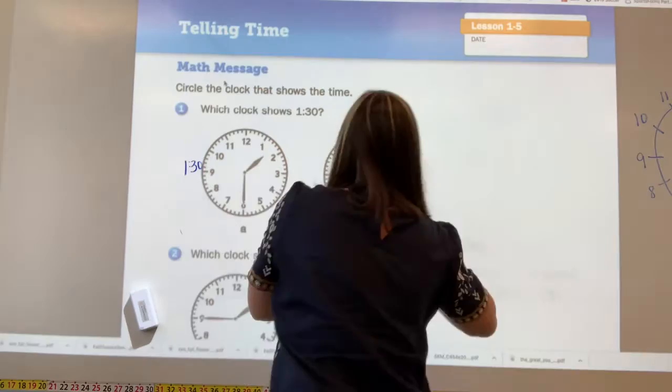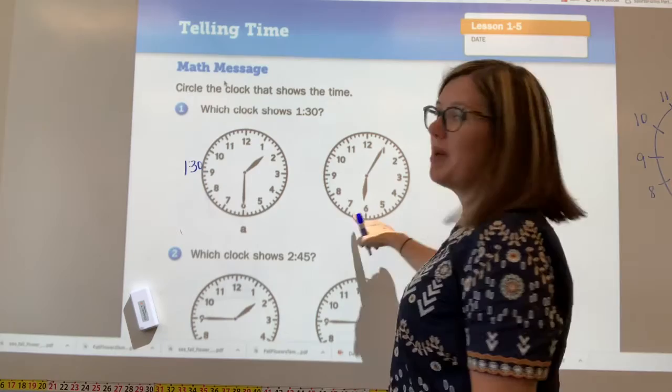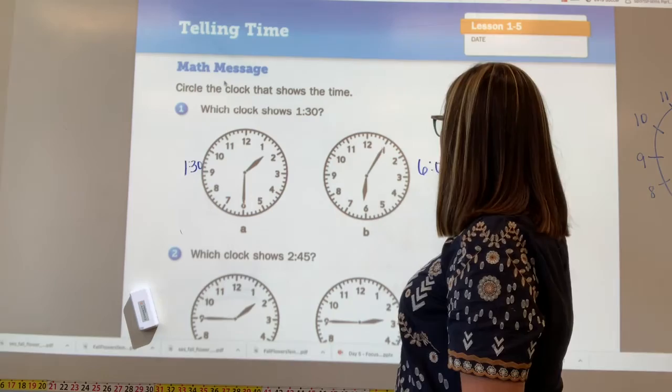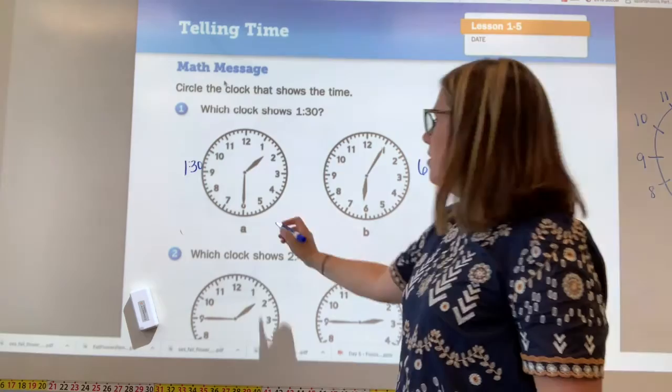Now let's figure out what this clock says. So this hour hand is between the six and the seven. So that means it's six. And then let's count our minutes. That's 6:05. So which clock shows 130? We would circle A.